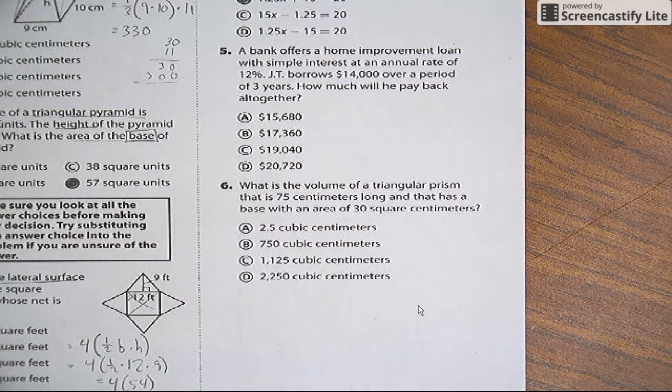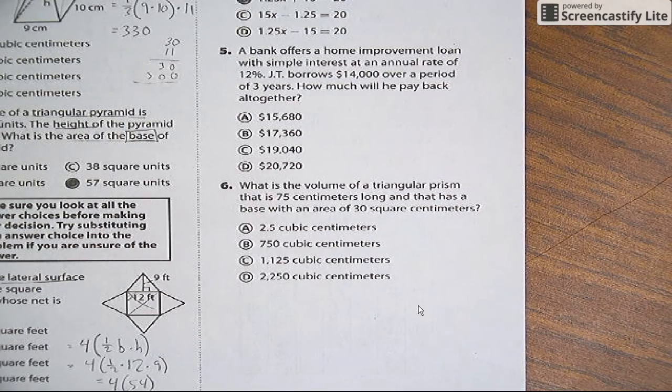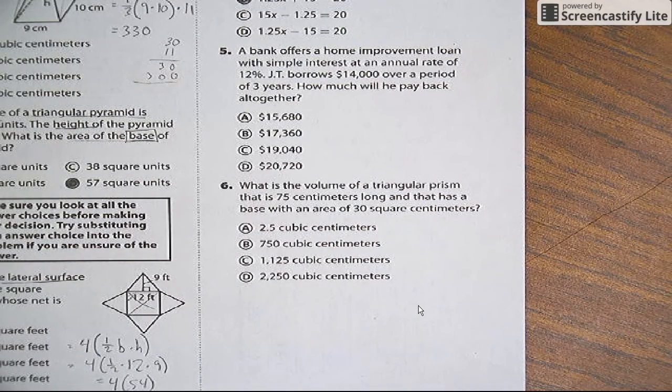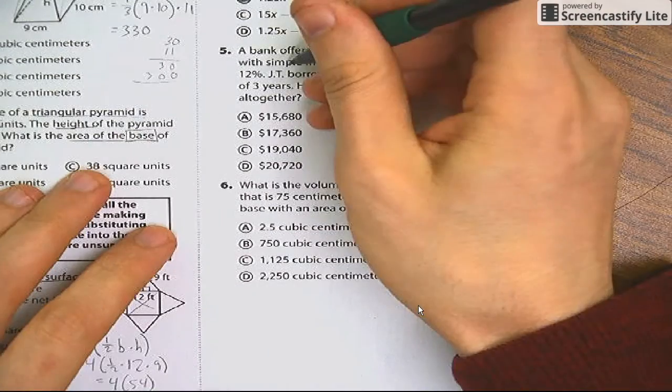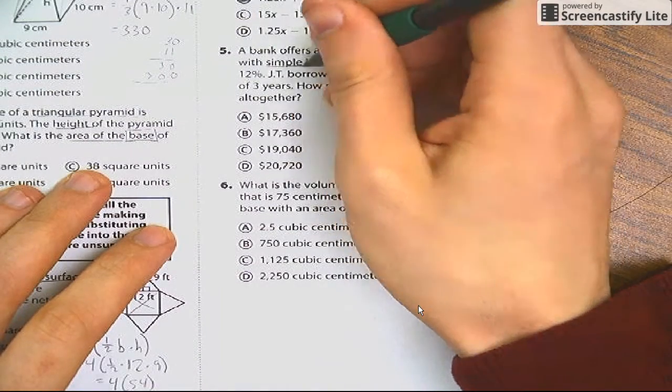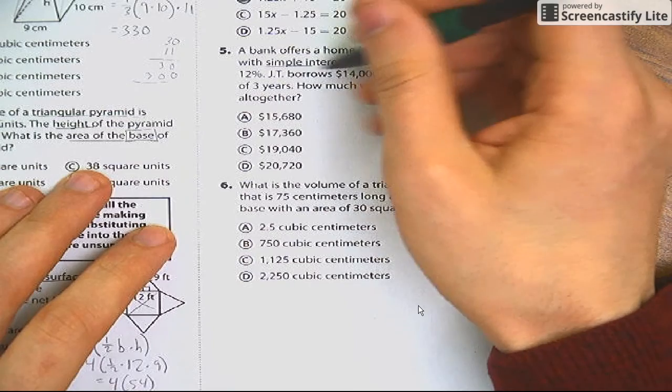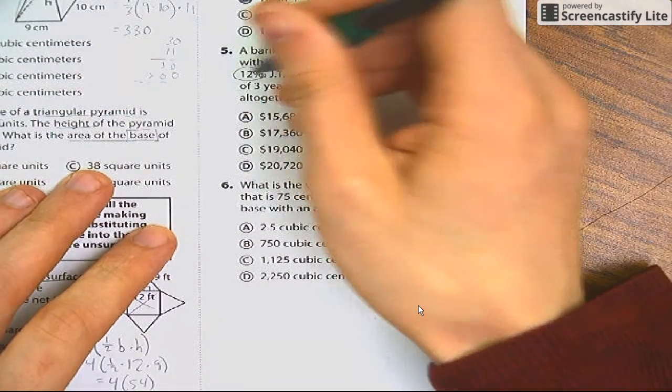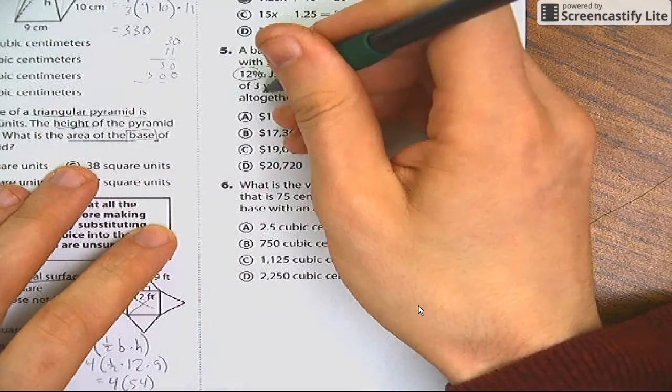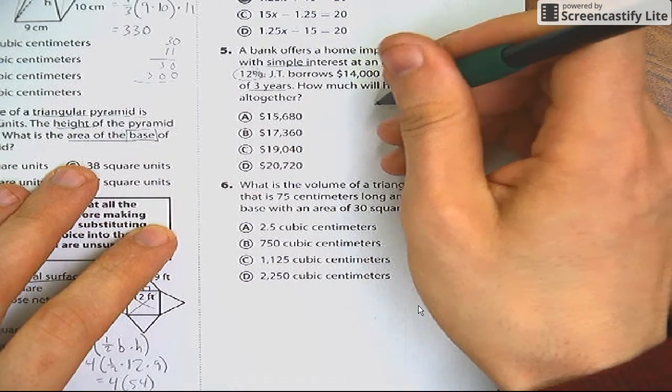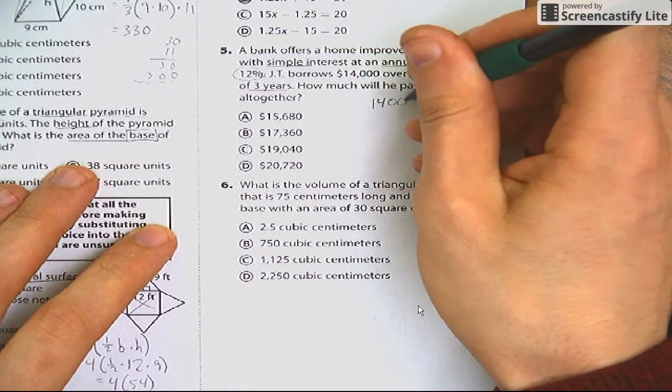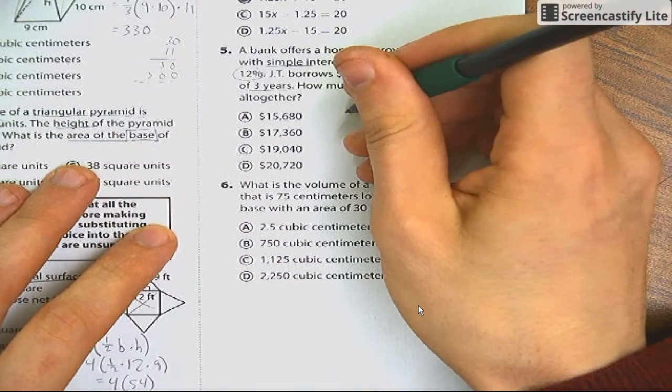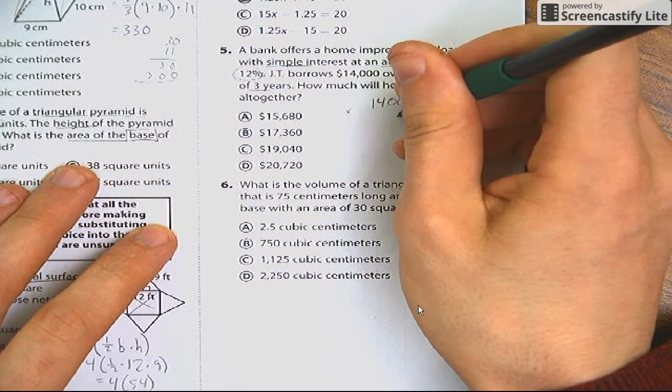So altogether he's going to pay 12% of $14,000, but he's going to pay it three times because it's going to be per year, right? So simple interest doesn't mean you only multiply interest one time. Annual is yearly. Here's your 12%. So for three years, this is what I'm going to do. $14,000 is what I borrow. I'm going to have to pay back that $14,000. But I also have to pay back 12% of it. So I multiply this by 12%.